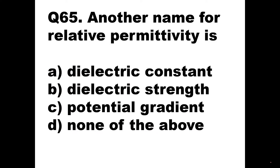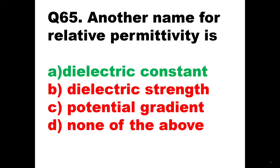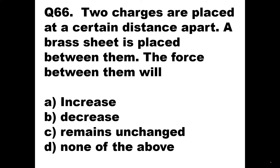Question number 65: Another name of relative permittivity is? Another name of relative permittivity is the dielectric constant, because it is the dielectric constant between the plates of a capacitor. So option A is the right answer: another name for relative permittivity is dielectric constant.